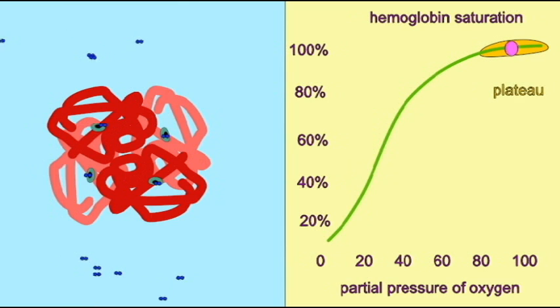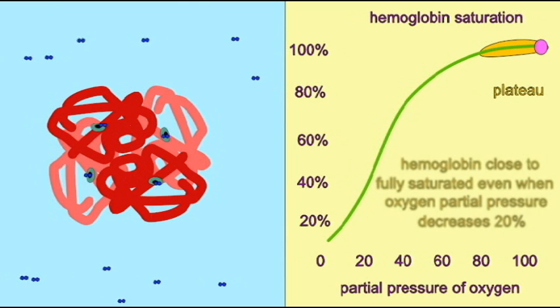So even if the partial pressure of oxygen in the lungs were to change by, say, 20%, this would not result in an appreciable change in the amount of oxygen being carried by hemoglobin in the blood. So at higher altitudes and during a mild respiratory disorder, our hemoglobin is carrying about as much oxygen.